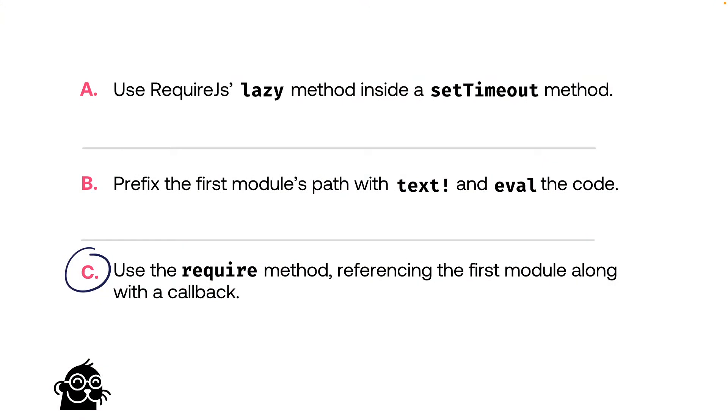Most of your answers are C, which is 100% correct. There is no lazy method. There is a setTimeout method which can be used to asynchronously load stuff, but if we went that route we'd bypass the whole RequireJS loading path system, and that just wouldn't work. Text and eval actually might work, but I know it's not a good option. That leaves us with option number three: use the require method referencing the first module along with a callback. C is the correct answer.